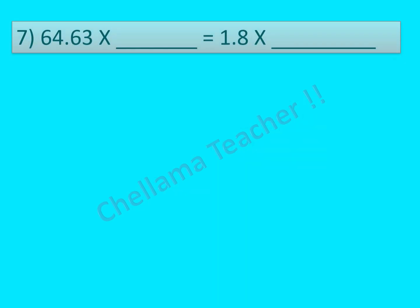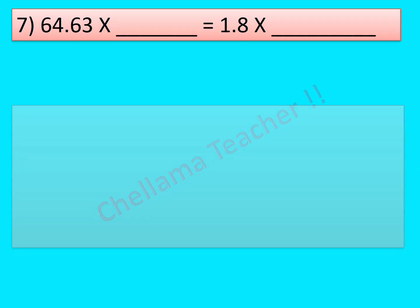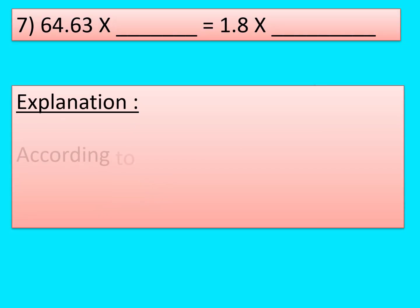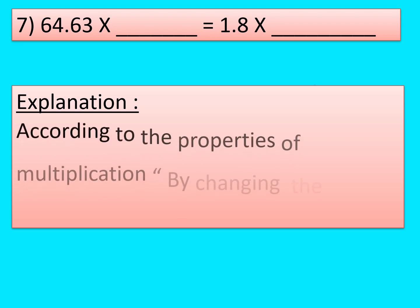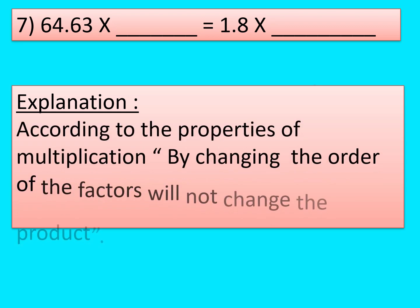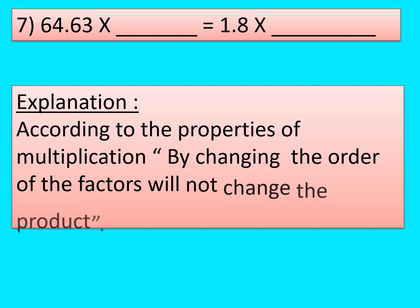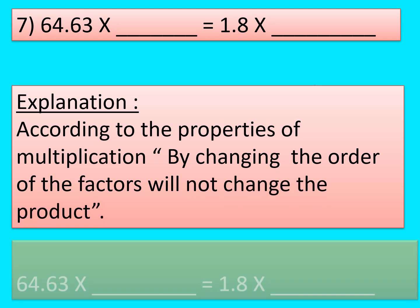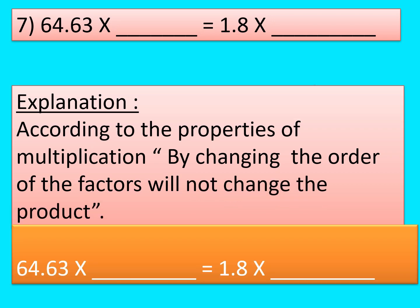Question No. 7: 64.63 × dash is equal to 1.8 × dash. According to the commutative property of multiplication, changing the order of the factors does not change the product. So 64.63 × 1.8 is equal to 1.8 × 64.63.